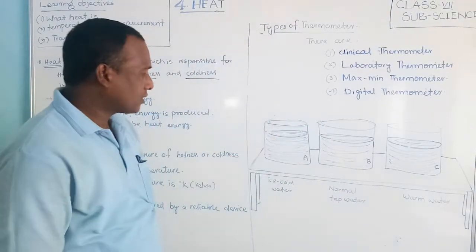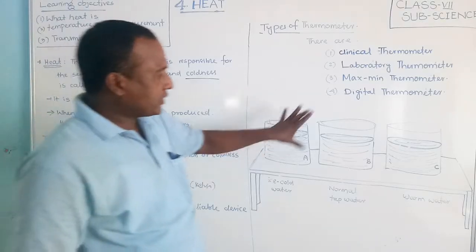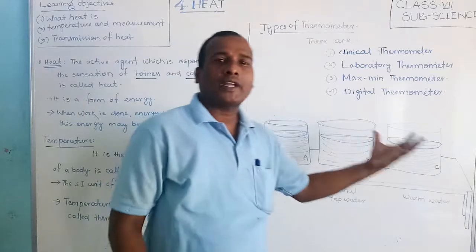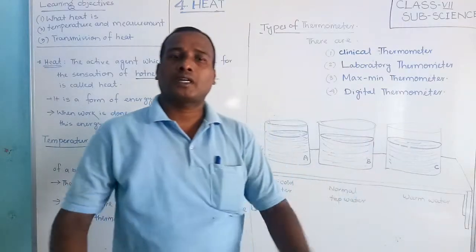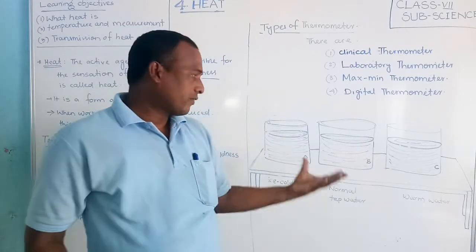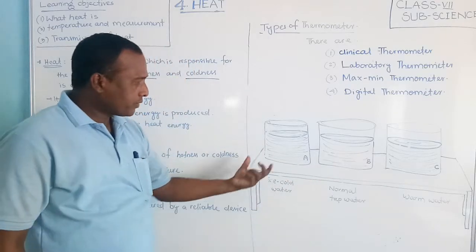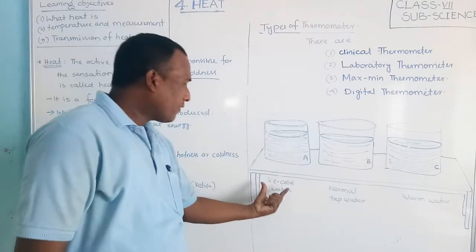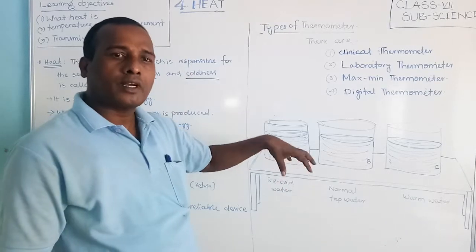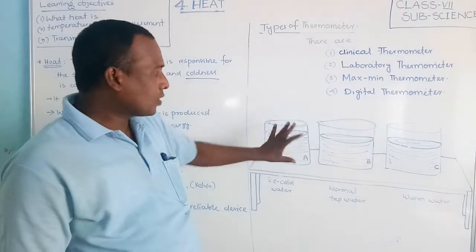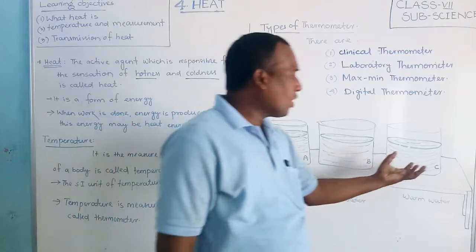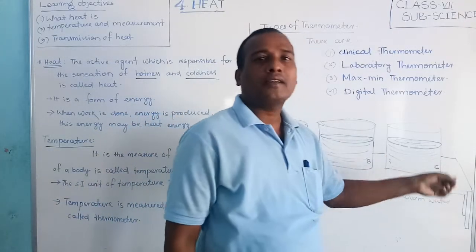Here I have three tubs with different types of water at different temperatures. The first tub has ice cold water — I put ice in it, so it is very cold. The second is normal tap water. And the third contains warm water.